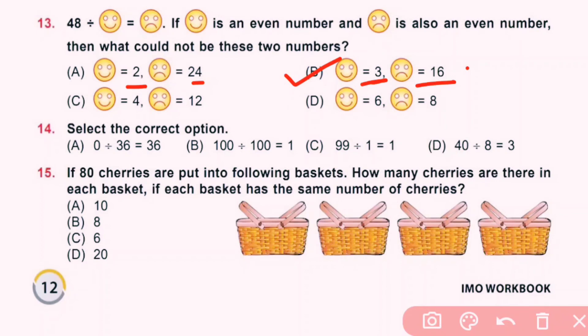Question 14: Select the correct option. 0 divided by 36 equals 36, this is incorrect. 100 divided by 100 is 1, this is correct option. 99 divided by 1 is 99, this is incorrect. And 40 divided by 8 is 5, so it is incorrect option. So only 100 divided by 100 is correct option. B is correct answer.